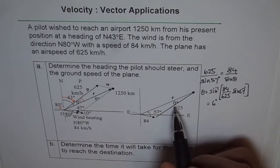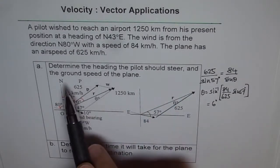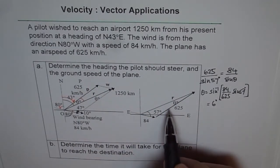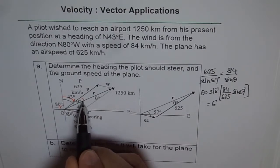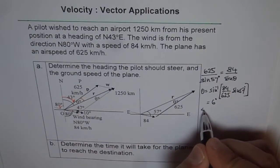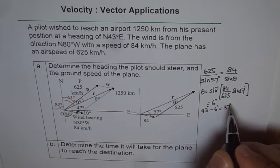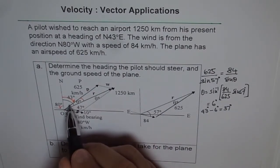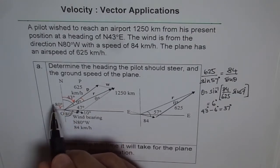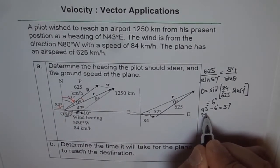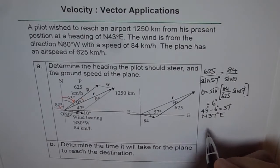Now we know theta as 6 degrees, which helps us answer the first part. The heading is 43 degrees minus 6 degrees, which equals 37 degrees. So the heading of the plane should be 37 degrees east of north — from north it is 37 degrees east. That is the heading of the plane.